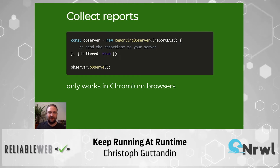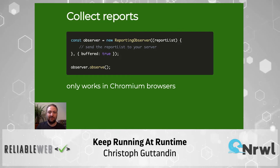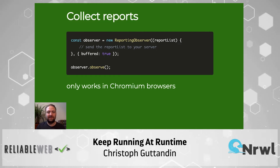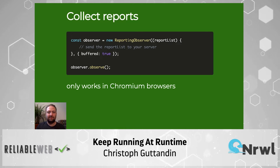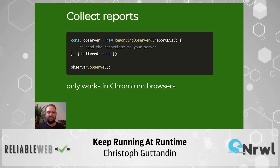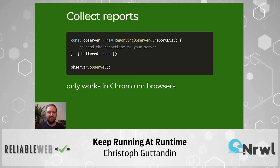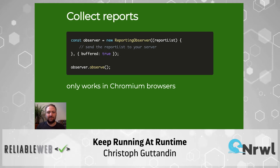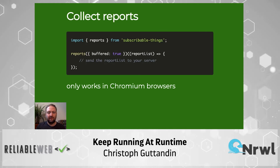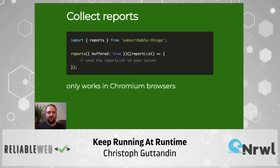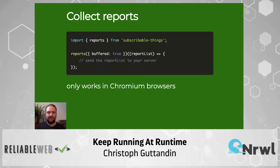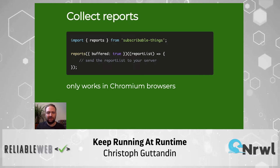If a browser logs messages on your user's device, you would normally never see them. Typically these messages tell you about the usage of deprecated APIs, browser interventions, or violations of your content security policy. Unfortunately the ReportingObserver is only available in Chrome, but there is an older way to collect CSP violations by listening for the securitypolicyviolation event, which works across all major browsers. I also added a wrapper for this to subscribable-things in case you want to use it reactively.